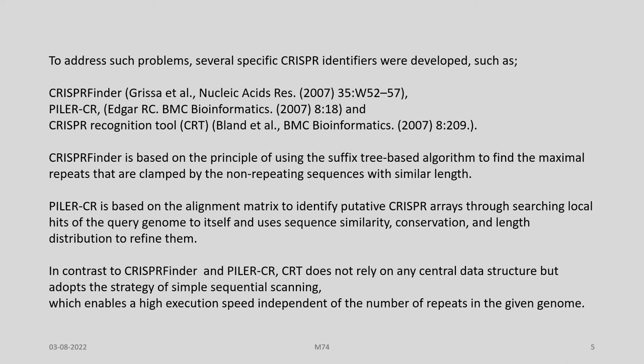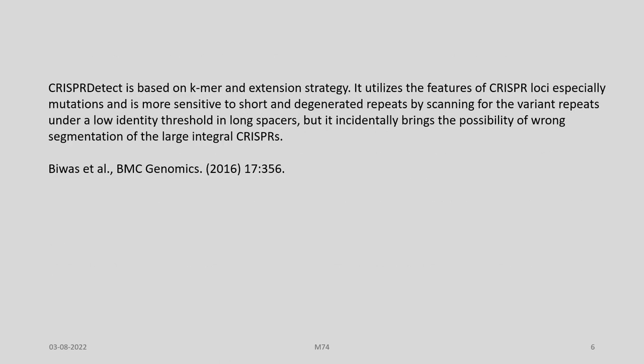In contrast to CRISPR-Finder and Piler-CR, the CRISPR Recognition Tool does not rely on any central data structure but adopts a strategy of simple sequential scanning, enabling high execution speed independent of the number of repeats in the given genome. There is another tool called CRISPR-detect, which is based on a K-mer and extension strategy. It utilizes the features of CRISPR loci, especially mutations, and is more sensitive to short and degenerated repeats by scanning for variant repeats under a low identity threshold in long spacers.